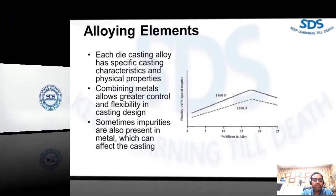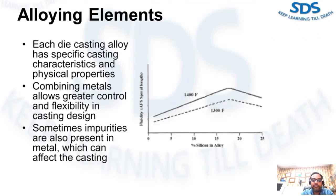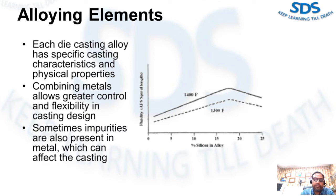Welcome to Steady Die Casting Solution. My name is Bharat Sharma. Today we talk about the alloying elements in aluminum die casting. As we know, the mechanical properties as well as casting characteristics of pure aluminum are improved through the addition of various alloying elements. Each die casting alloy has specific casting characteristics and physical properties depending on the casting being made, so you can choose the alloy characteristics based on the component's specific use.